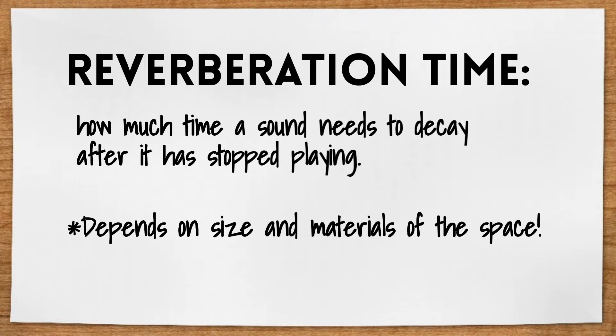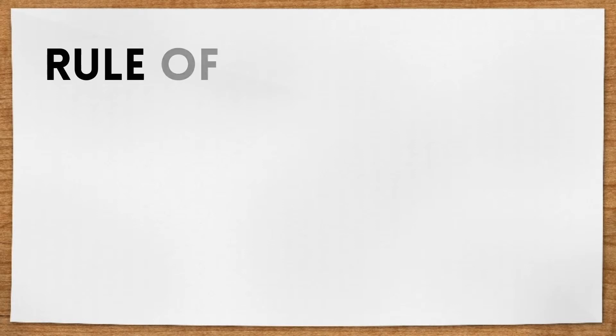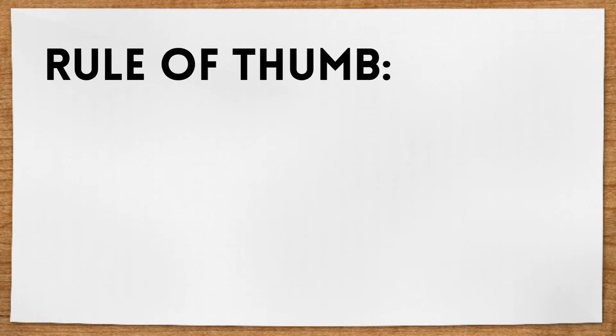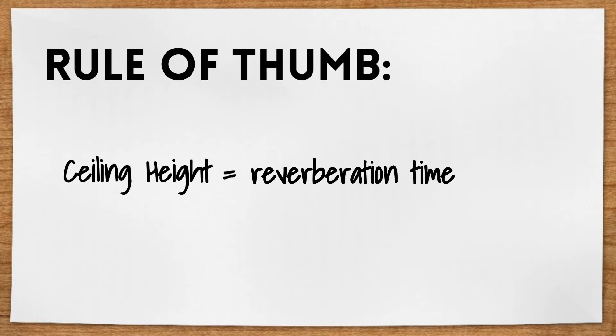When it comes to ceiling heights, there is a rule of thumb commonly used to get a quick estimation of how high the ceiling would have to be. The rule is: the estimated ceiling height is equal to the desired reverberation time times 20.